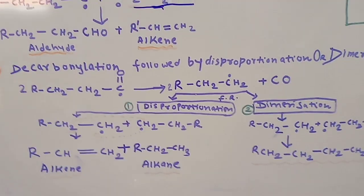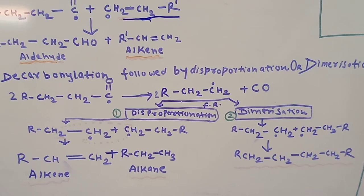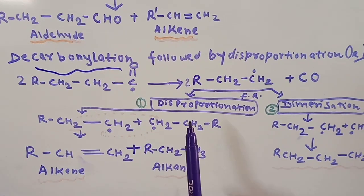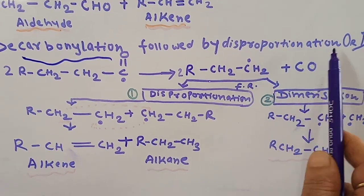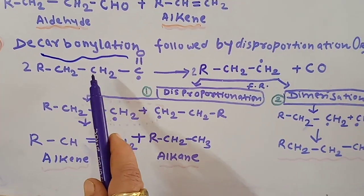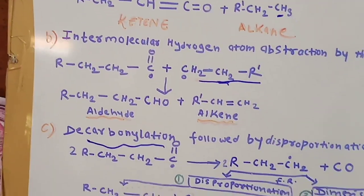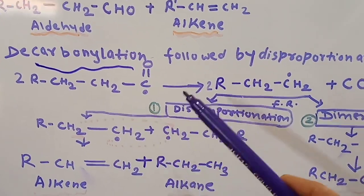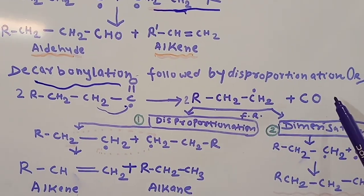The third step is decarbonylation followed by disproportionation or dimerization. Decarbonylation means the carbonyl group is eliminated. The acyl free radical undergoes decarbonylation — removal of the carbonyl group — and the free radical is transferred to the carbon atom, giving a new alkyl radical RCH₂CH₂. This free radical can then undergo either disproportionation or dimerization.